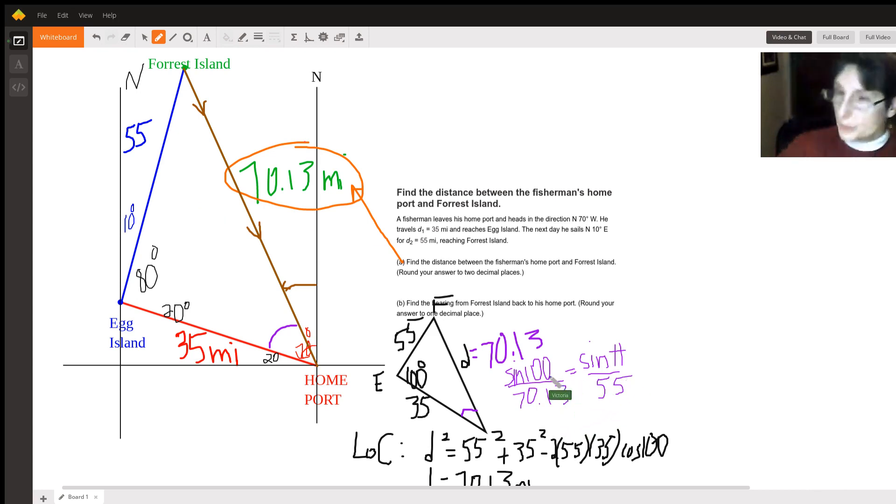So when you multiply by 55 and then do the inverse sine, you find out that this angle is 50.6 degrees.